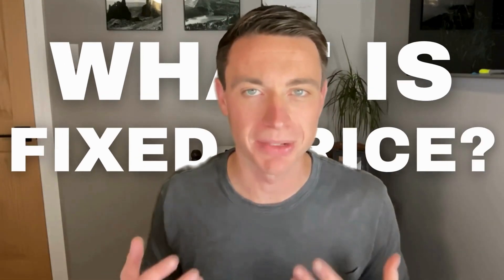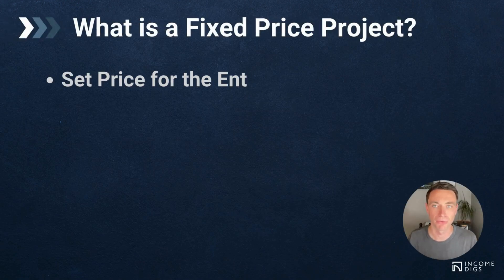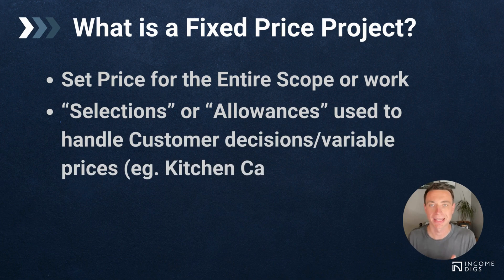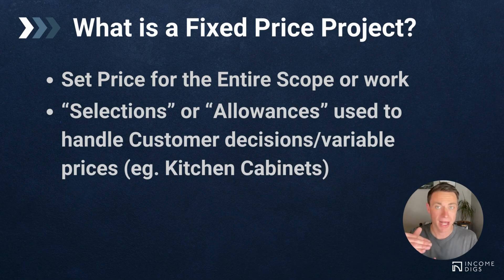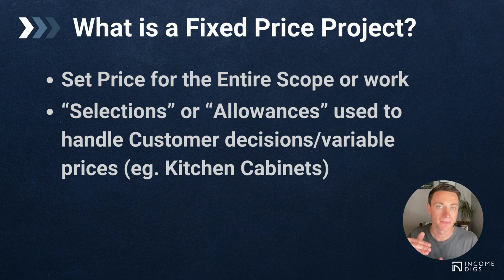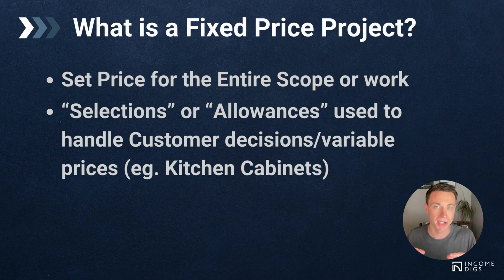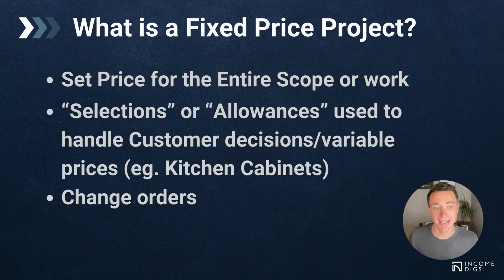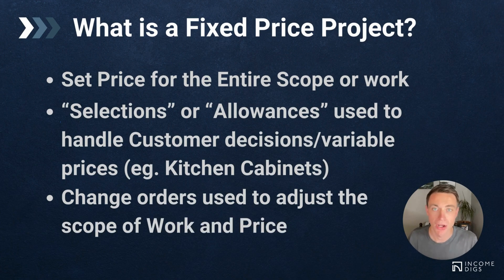So what is a fixed price contract? Basically, you set the price for the entire scope of work. That price might have some built-in flexibility in what's called selections or allowances. For example, the entire project might be $100,000. Baked into that is a certain amount for allowances — say your kitchen cabinets at $25,000. If you spend a little more, that marginal increase goes on top of the $100,000; if less, it's deducted. Beyond that, change orders are exclusively used to change the price of a project — the price doesn't change without a change order being issued.